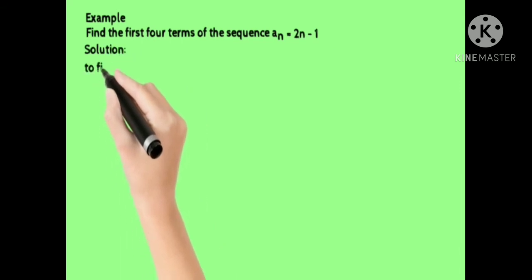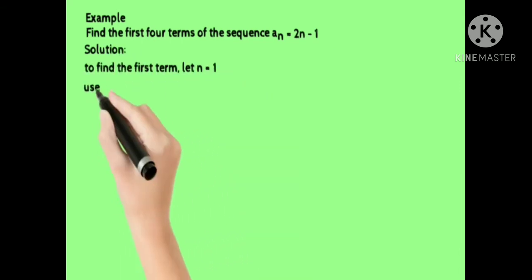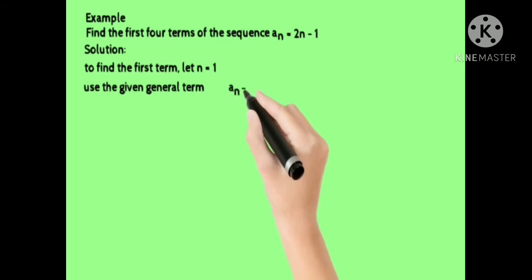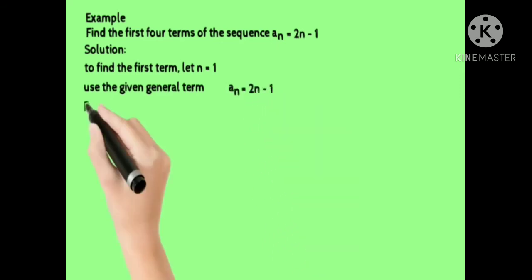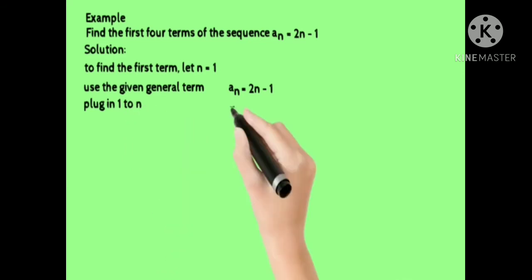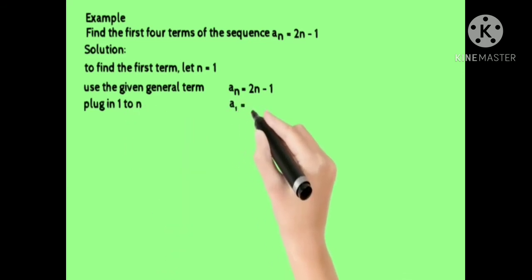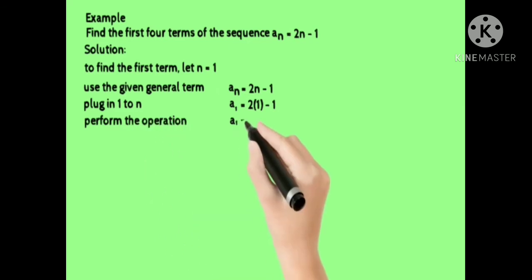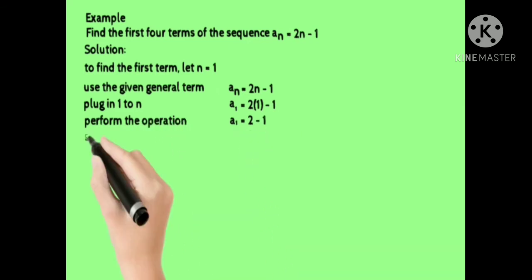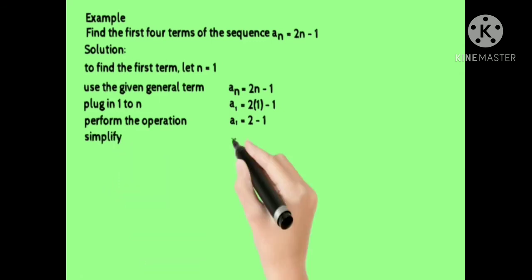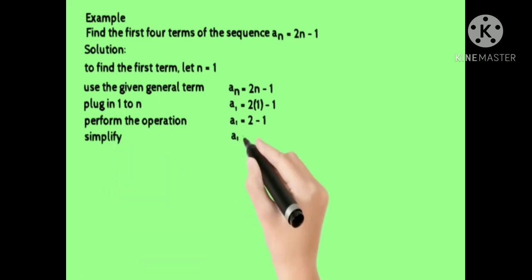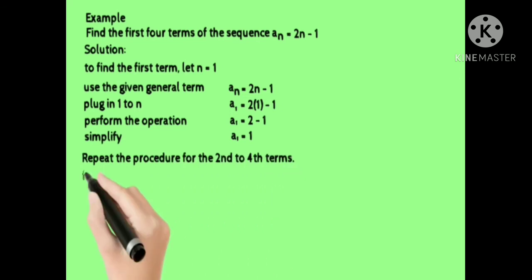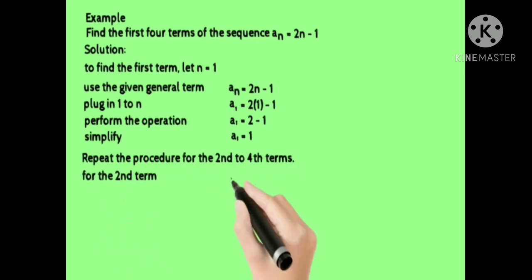To find the first term, let n equal 1. Use the given general term: a sub n is equal to 2n minus 1. Plug in 1 for n: a sub 1 is equal to 2 times 1 minus 1. Perform the operation — that is 2 minus 1 — and simplify. Therefore a sub 1 is equal to 1.